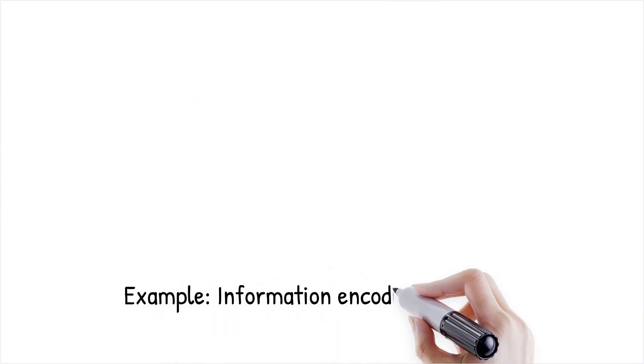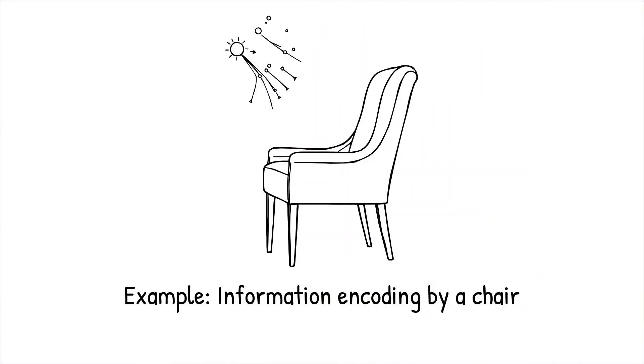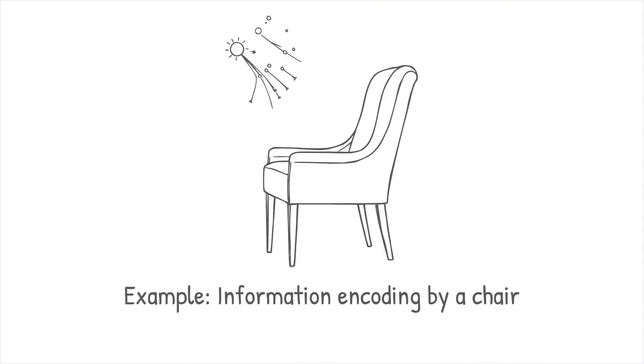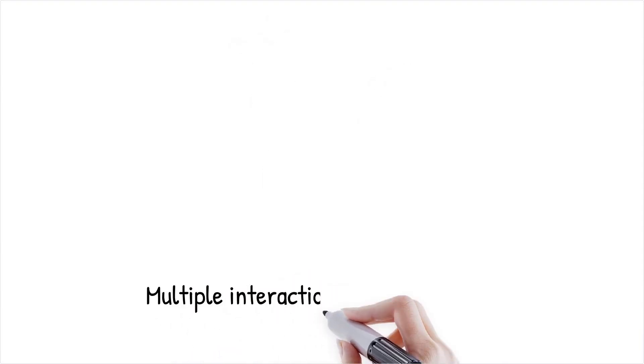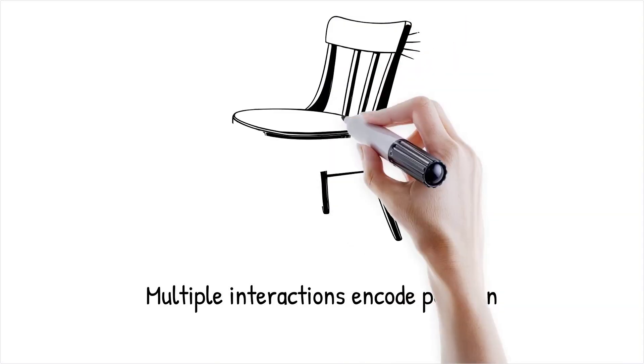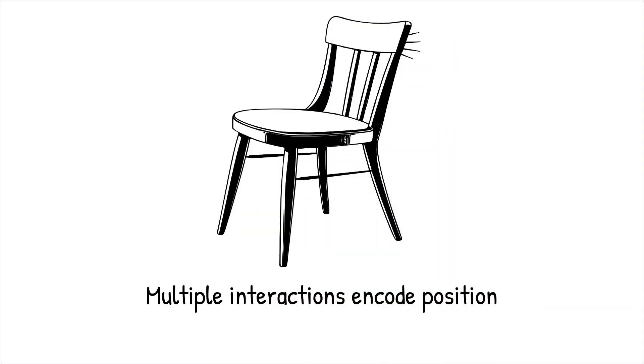Example: A chair reflects photons, produces sound waves when moved, and interacts thermally with its surroundings. Each of these interactions encodes information about the chair's position, ensuring multiple observers can agree on its location.